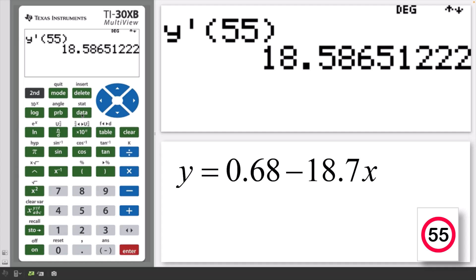This is using the line of best fit to evaluate the predicted value of the braking distance for a speed of 55 kilometers an hour. The rule predicts that at 55 kilometers an hour, the vehicle will have a braking distance of approximately 18.59 meters.